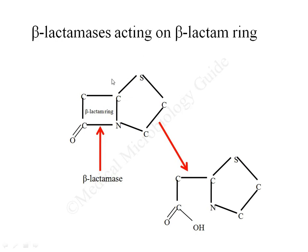All beta-lactam antibiotics have a common ring called the beta-lactam ring. This ring can be hydrolyzed by various types of beta-lactamases. The end product of hydrolysis of the beta-lactam ring by beta-lactamases will be acidic. For example, if penicillin is hydrolyzed by penicillinases, the end product is penicillinoic acid. If imipenem is hydrolyzed by carbapenemases, the end product will be imipenoic acid.